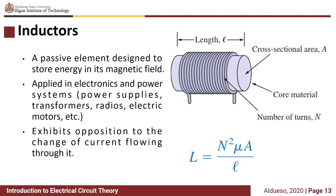An inductor exhibits opposition to the change of current flowing through it. Basically, an inductor consists of a coil of conducting wire with N number of turns, wound around a core material with cross-sectional area A and length L, where the inductance L is given by N squared times the permeability of the core material times the cross-sectional area A over the length.